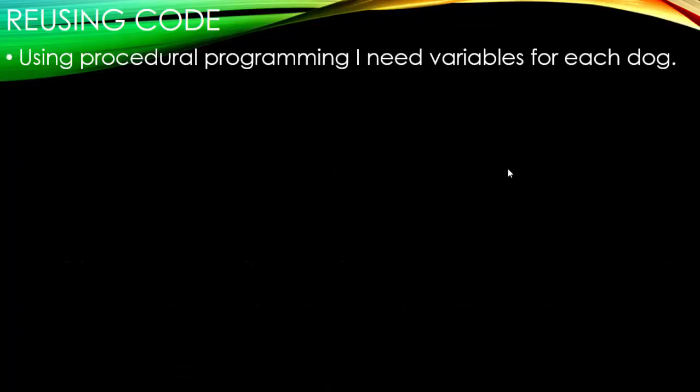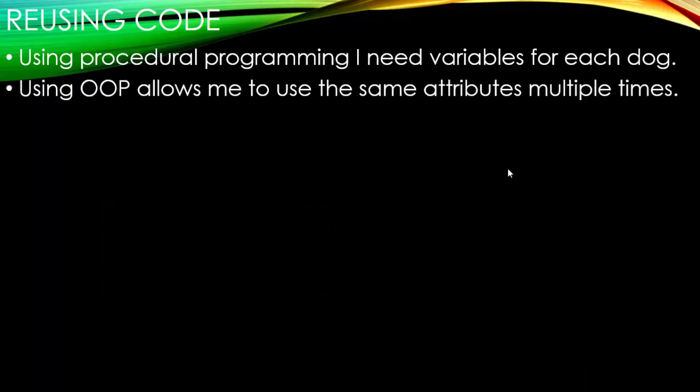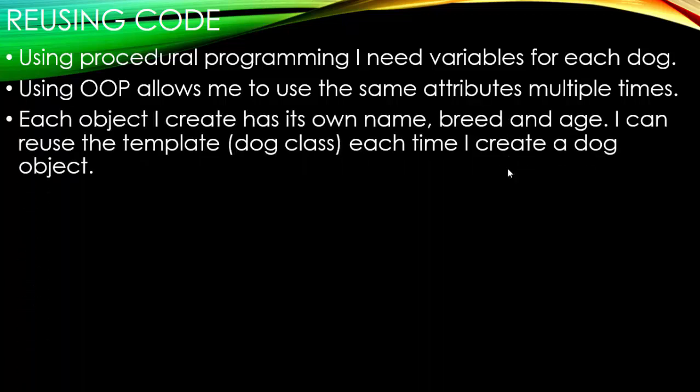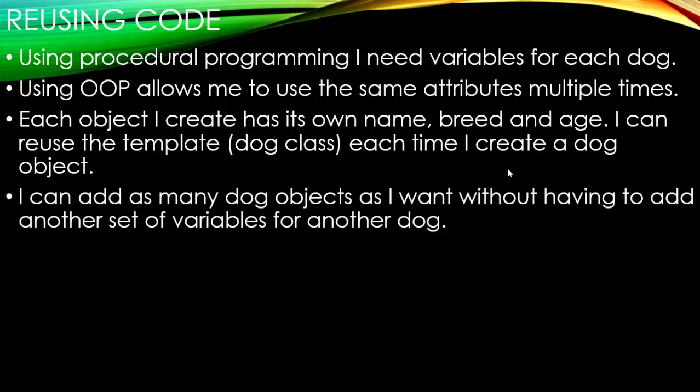So using procedural programming, I need variables for each dog. Using object-oriented programming allows me to use the same attributes multiple times. Each object I create has its own name, its own breed, its own age. I can reuse the template, the dog class, each time I create a dog object. I can add as many dog objects as I want without having to add another set of variables for another dog.